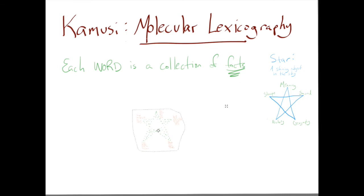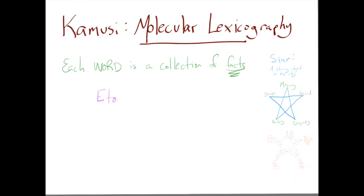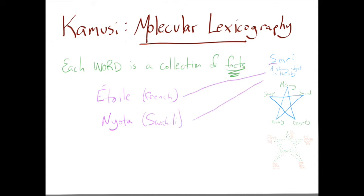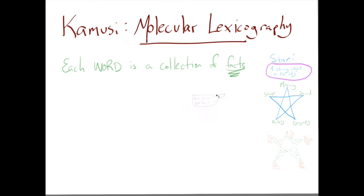Each of these facts can themselves be linked to other facts within other words in other languages or within the same language. For example, both 'Etoile' in French and 'Nyota' in Swahili share the meaning of a shining object in the sky with the English word 'star', although none of the other features — shape, sound, history, geography — are shared.